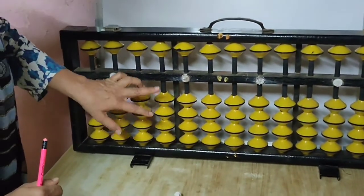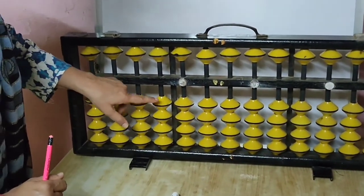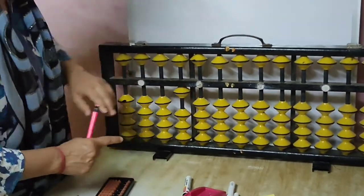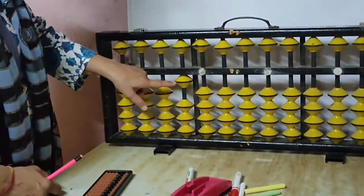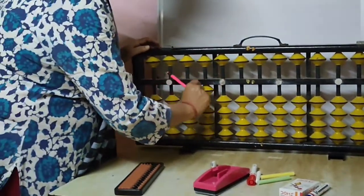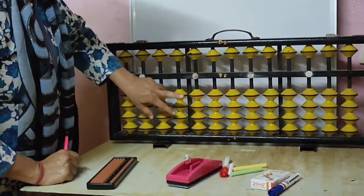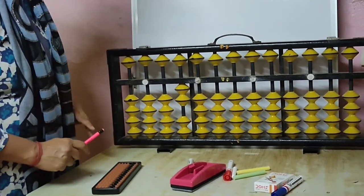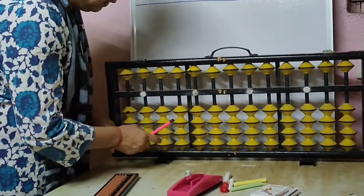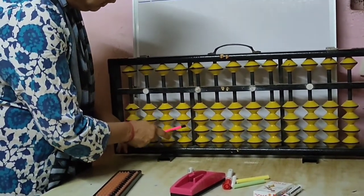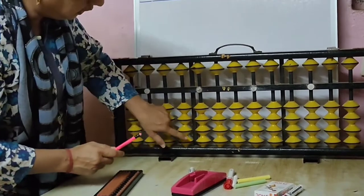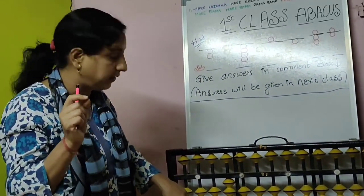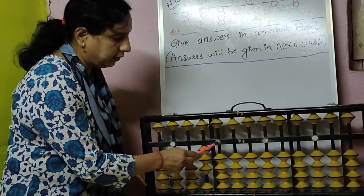So in this bigger abacus you have to do ten with this index finger — like this. Understood? This is ten. How to do twenty? Clean the abacus. With this index finger — twenty. Now thirty: ten, twenty, thirty — three beads at a stretch. This is thirty: 3, 0 — thirty.